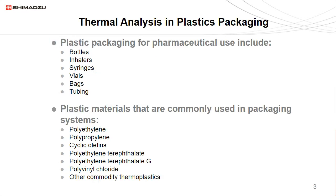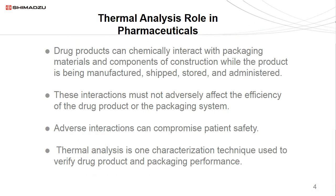Plastic packaging for pharmaceutical use includes bottles, inhalers, syringes, vials, baths, and tubing. Plastic materials commonly used in packaging systems include polyethylene, polypropylene, cyclic olefins, PET, PETG, polyvinyl chloride, and other commodity thermoplastics. Thermal analysis has a critical role in pharmaceuticals — drug products can chemically interact with packaging materials while the product is being manufactured, shipped, stored, or administered. Because these pharmaceutical drugs contain active pharmaceutical ingredients, these interactions with packaging material are inevitable. However, these interactions must not adversely affect the efficiency of the drug product or the packaging system, as any adverse interactions can compromise patient safety.